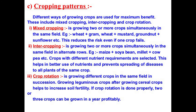Now we will see cropping patterns. Mixed cropping means growing two or more crops simultaneously on the same piece of land — for example, wheat plus gram, wheat plus mustard, or groundnut plus sunflower. The benefit is that if the price of one crop goes down, the farmer can compensate with the other crop. So mixed cropping provides financial security to farmers by growing multiple crops at the same time.